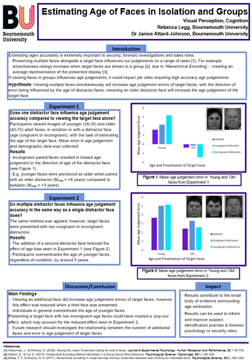As figure 1 shows, the age of isolated faces were estimated more accurately than the age of incongruent pairs. This increased bias in judgment was in the direction of the age of distractor faces. For example, when young adult faces were paired with older adult distractors, mean bias was plus 6 years compared to plus 3 years when viewed alone or plus 4 years with age congruent pairs. A similar pattern was seen with older adult faces, as there was a greater underestimation of age when paired with younger faces compared to alone or with age congruent faces.